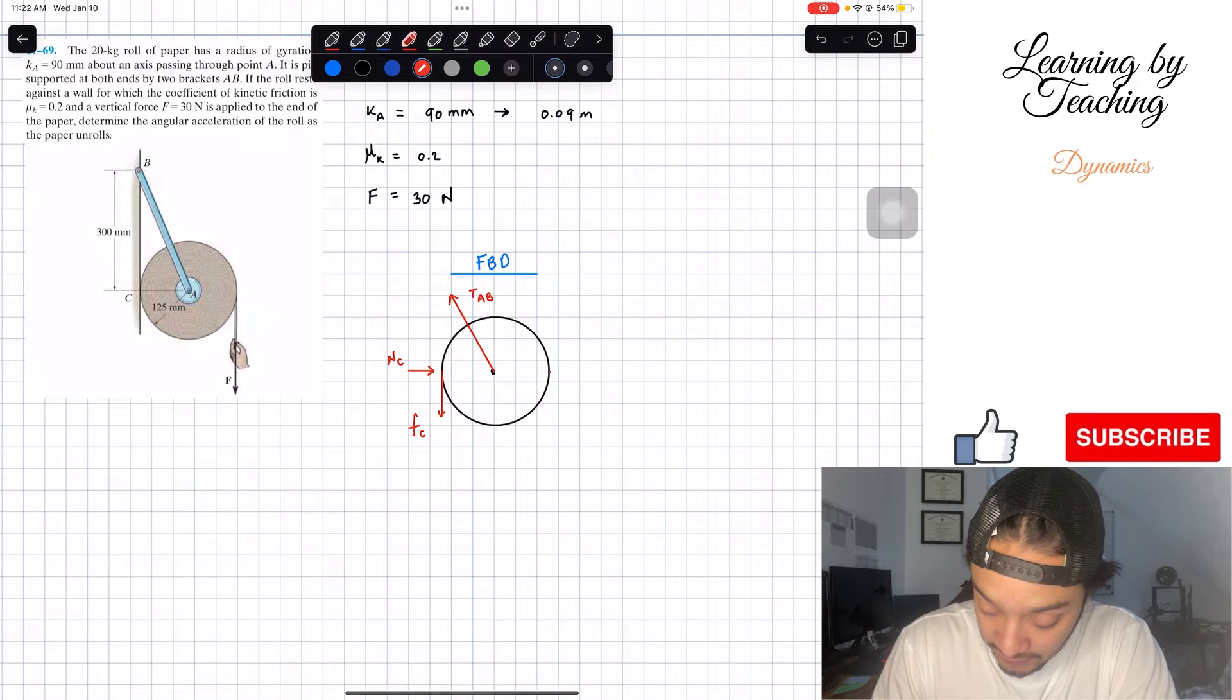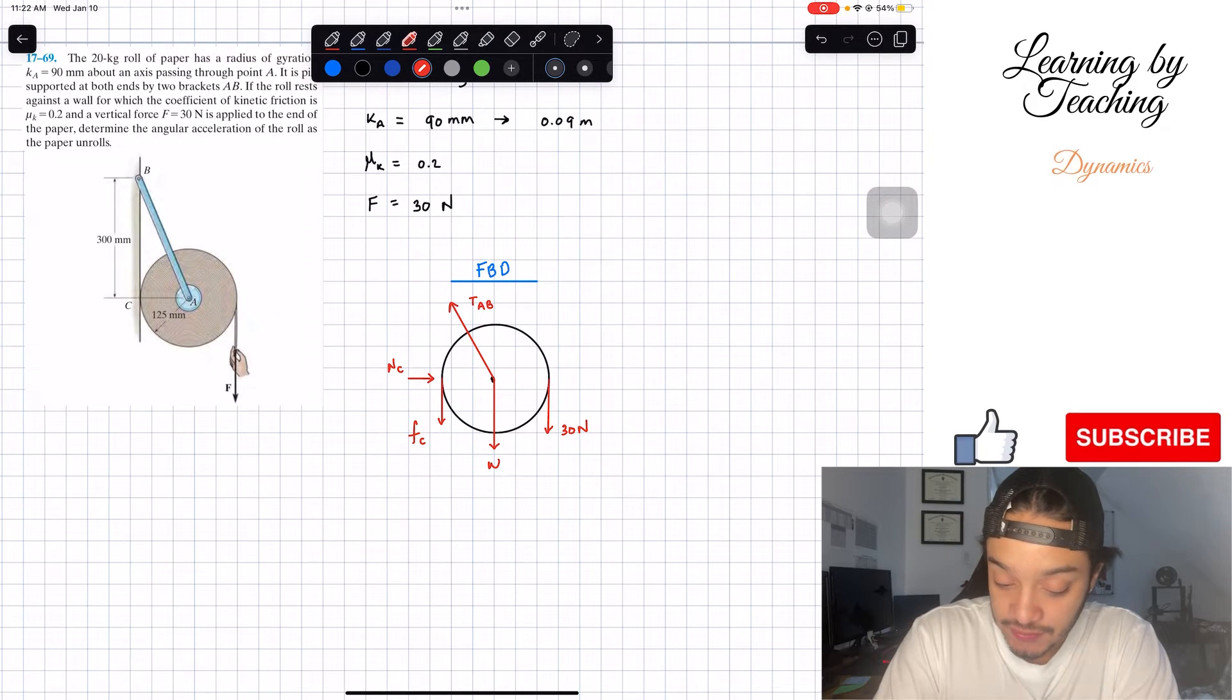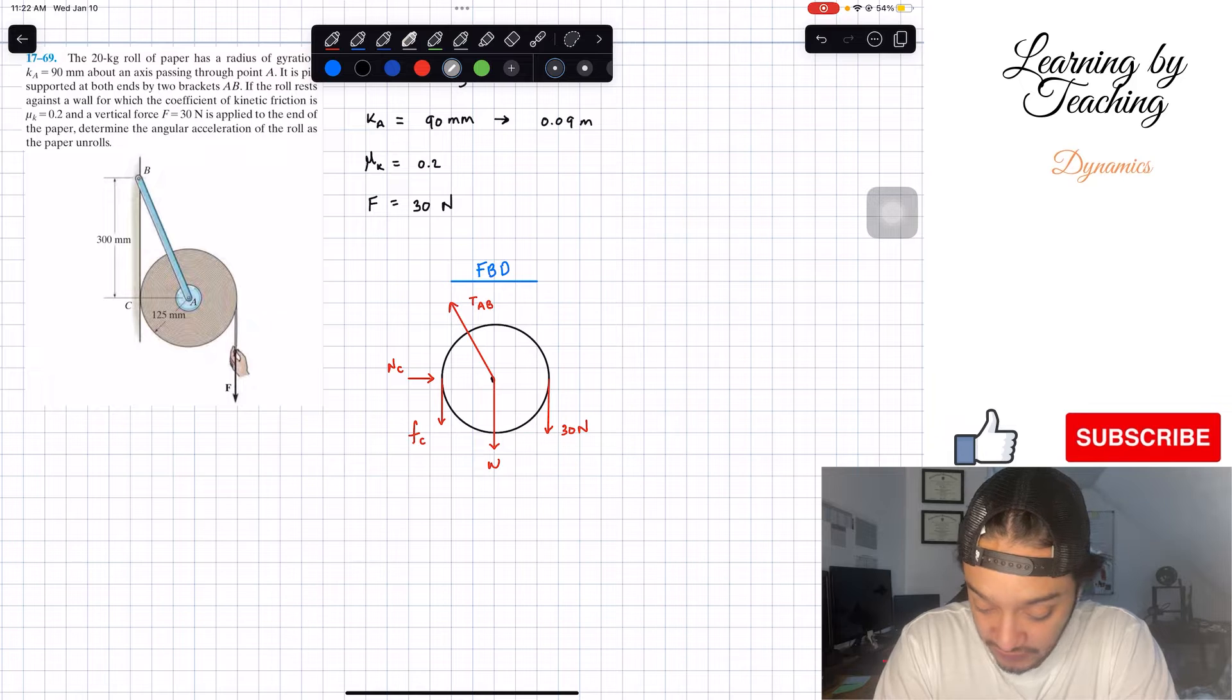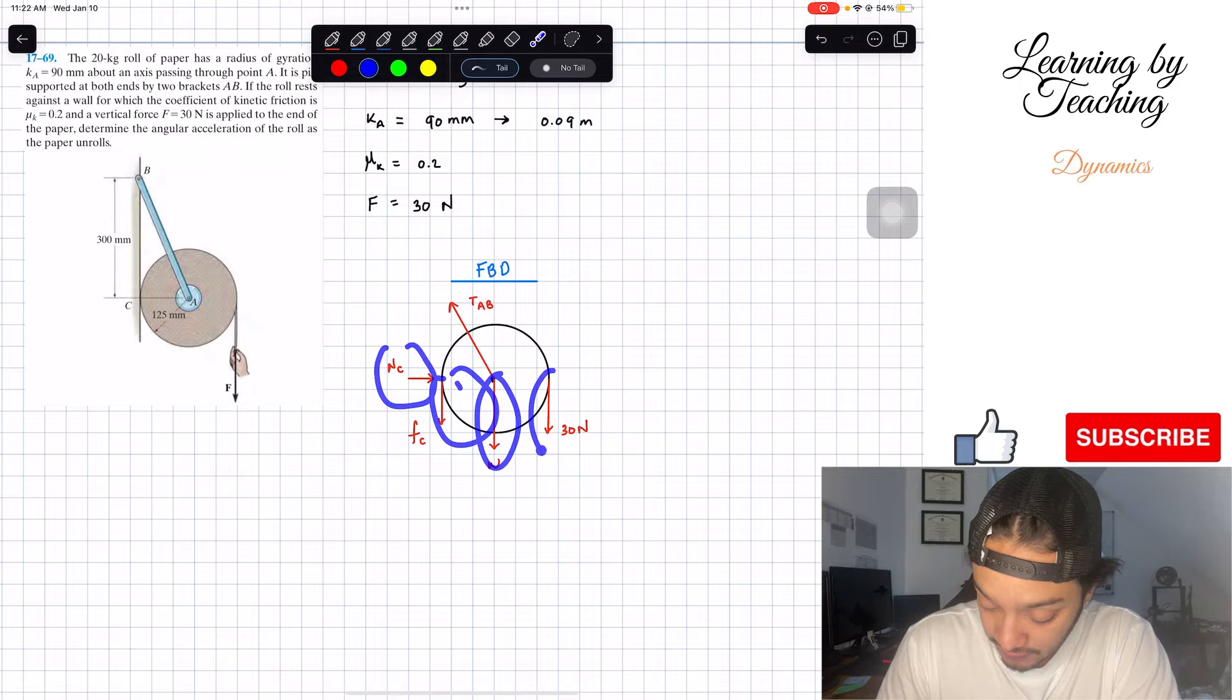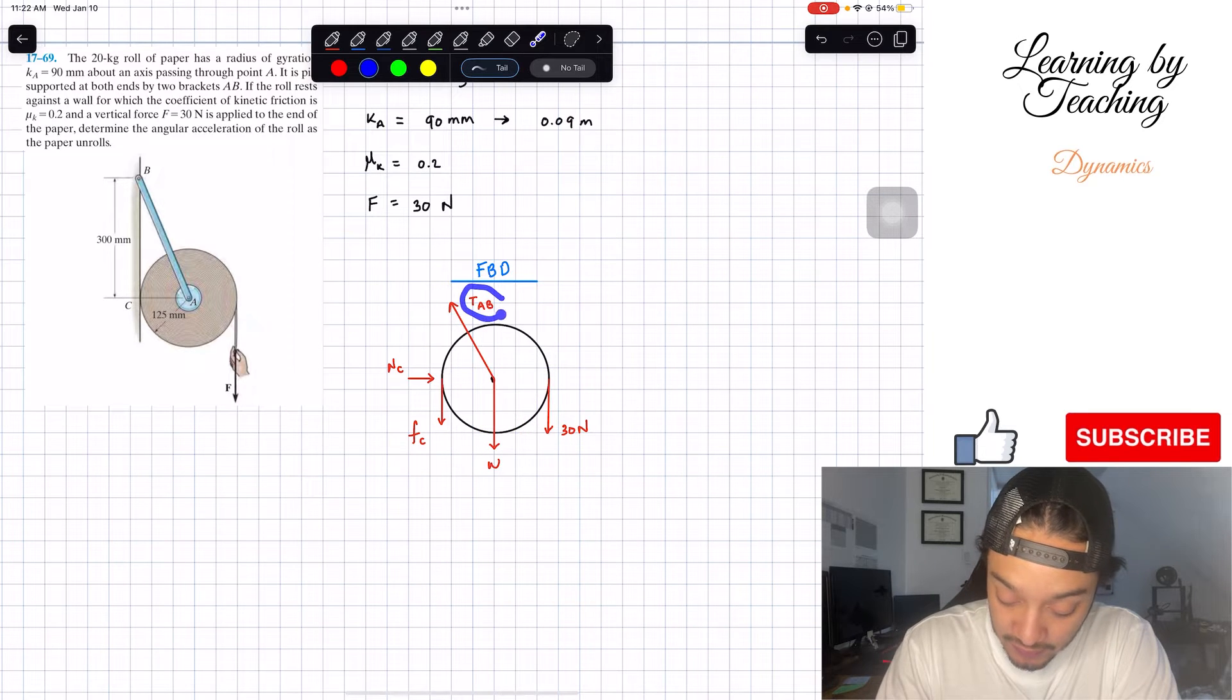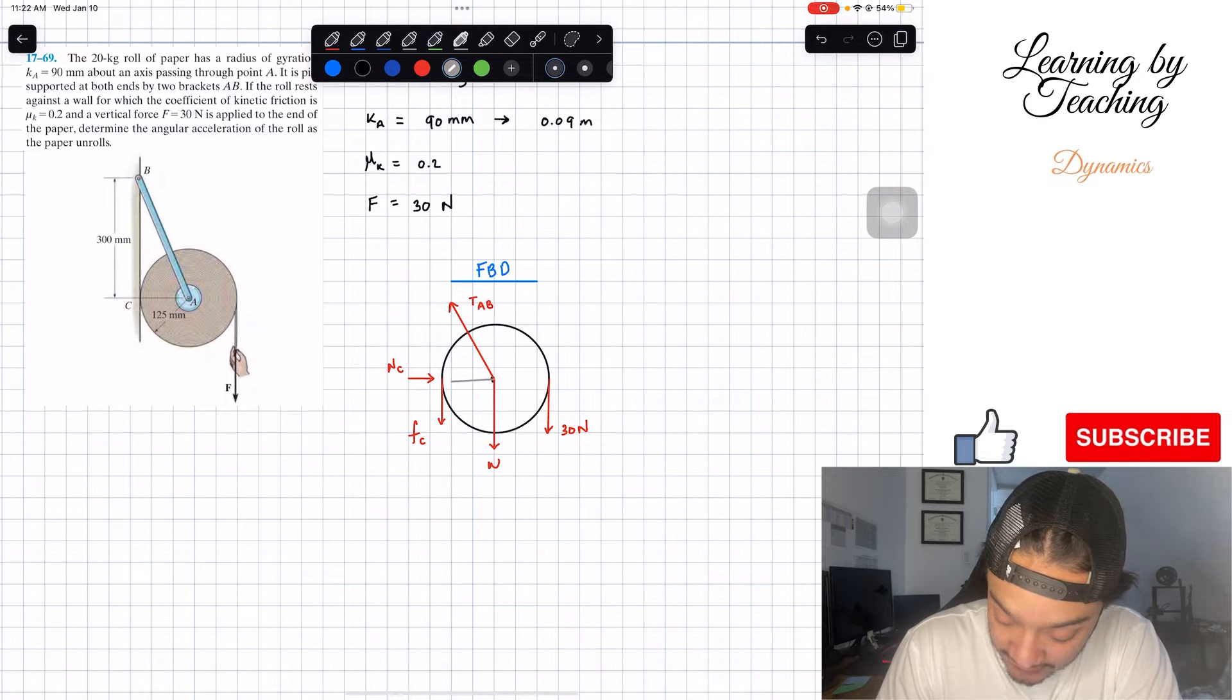Our frictional force is going to come down like this, so we got a frictional force at C. We will also have the force F going down, which we already know is equal to 30 newtons. And lastly, we're going to have the weight of this roll, and the weight is the mass times the acceleration of gravity. Most of them are purely horizontal or vertical except our tension AB.